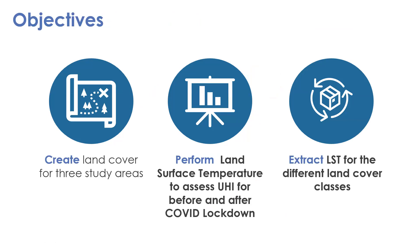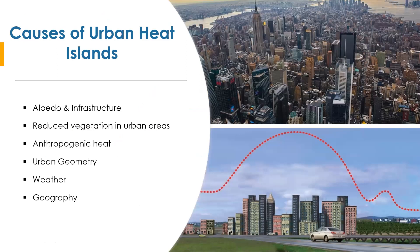The objectives of this study are to create a land cover map for three study areas, to perform a land surface temperature assessment of the urban heat island before and after the COVID-19 lockdown in Louisiana, and to extract land surface temperature for the different land cover classes. The first cause of urban heat islands is albedo and infrastructure: asphalt, concrete, and bricks absorb and reflect the sun's heat, causing surface and air temperatures to rise due to their thermal storage capacity.